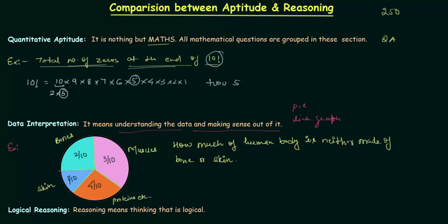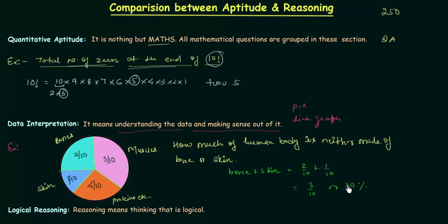This is a very simple problem. First we have to find out how much of the human body is made of skin and bone. So we are going to find bone plus skin: bone is 2 by 10 and skin is 1 by 10. Solving this we have 3 by 10, or 30 percent. So 30 percent of the human body is made of skin and bone, but we want to calculate the rest.